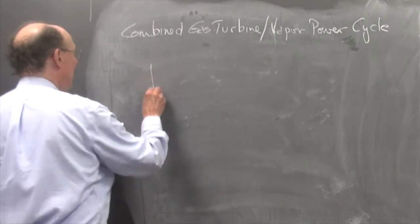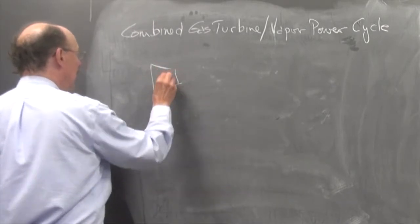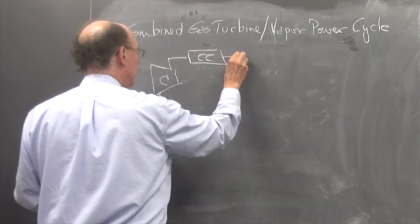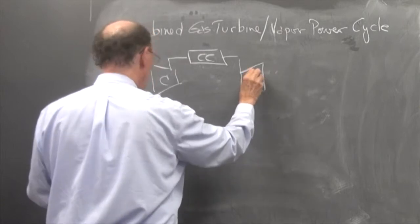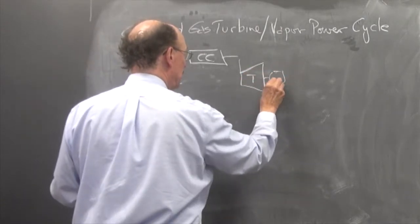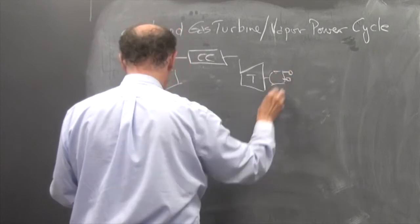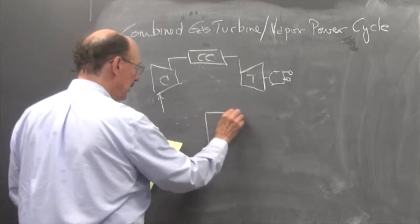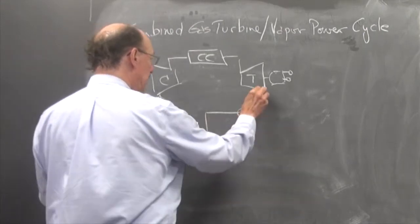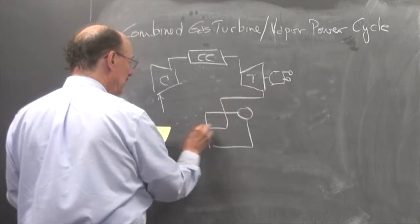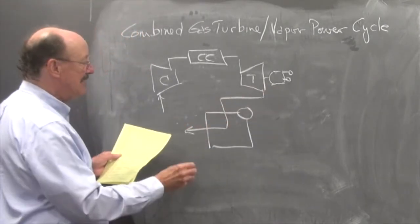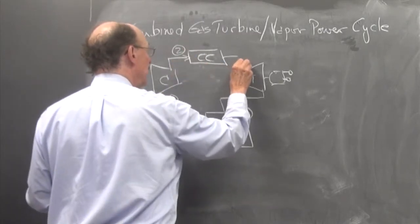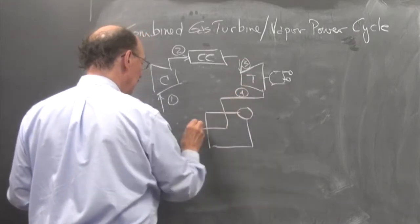I'm going to have a compressor goes out into a combustion chamber, into a turbine. The turbine is going to produce a certain amount of power. And now the exhaust from the turbine goes into a steam generator, providing the heat input to the steam generator. So if I have one, two, three, four, five.